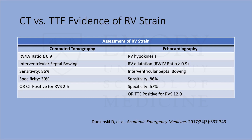RV strain on CT was defined as RV to LV ratio ≥0.9 and interventricular septal bowing; echo had similar parameters plus RV hypokinesis. Among 298 patients, 104 had both CT and echo. Using echo as the standard, sensitivity for both CT and echo was comparable at 86%, but CT specificity was significantly lower at 30% versus 67% for echo. The odds ratio was about 12 for echo versus 2.6 for CT. So both have good sensitivity, but CT specificity is much lower.